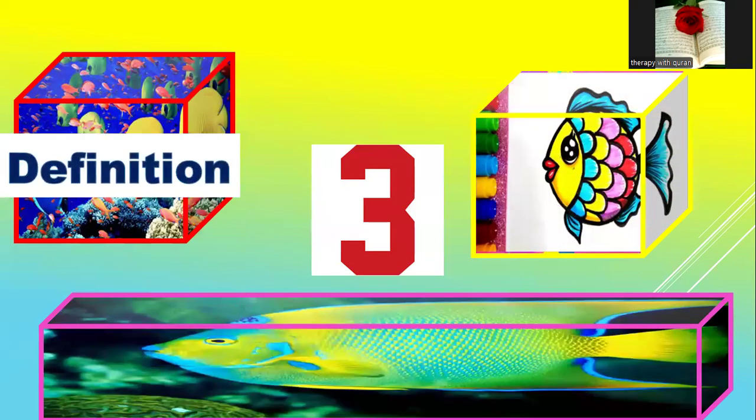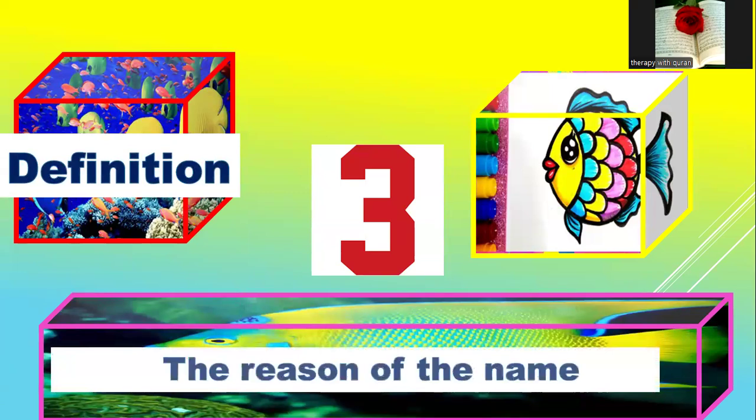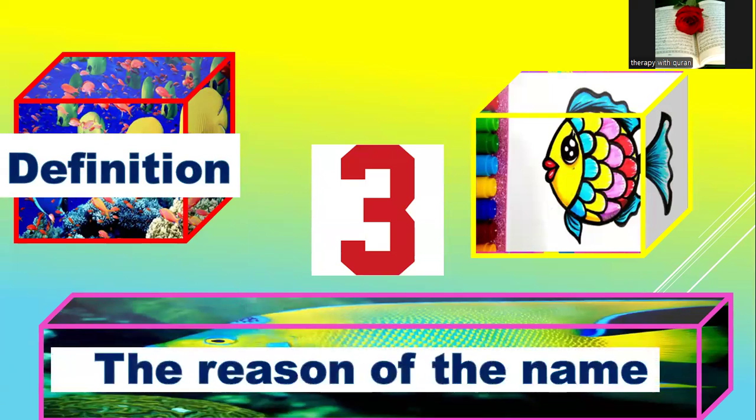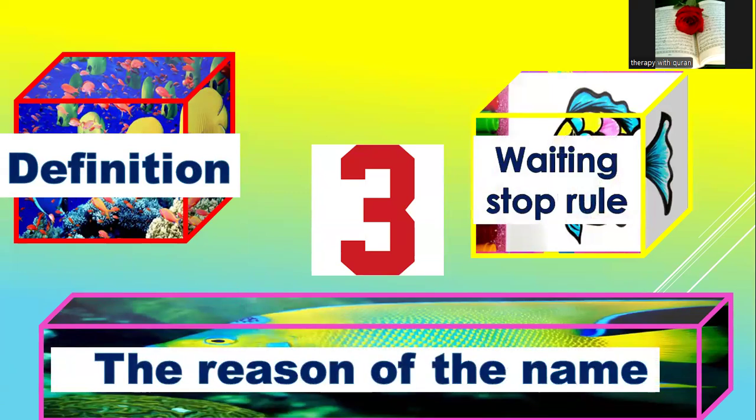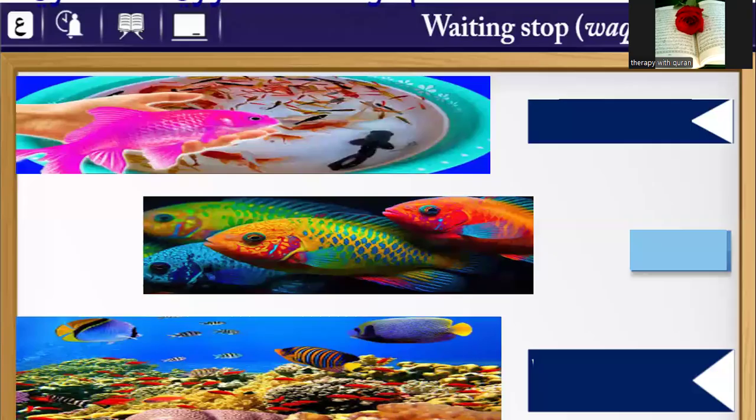We will cover three points: number one is the definition, number two is the reason for the name, and number three is the rule of the waiting stop. Let's start with the definition and the reason for the name.